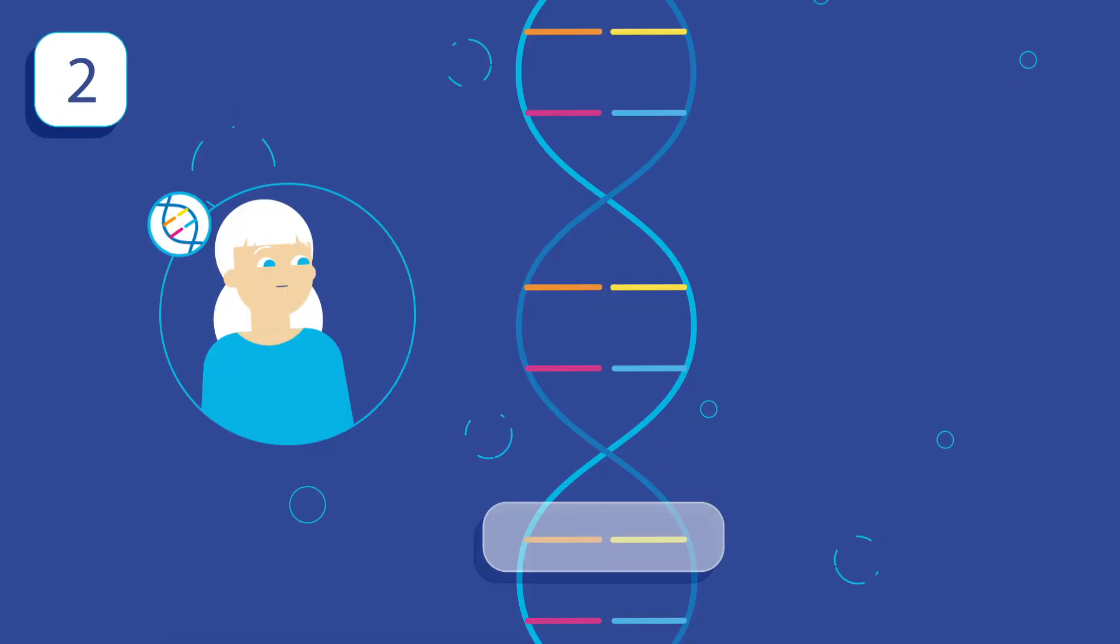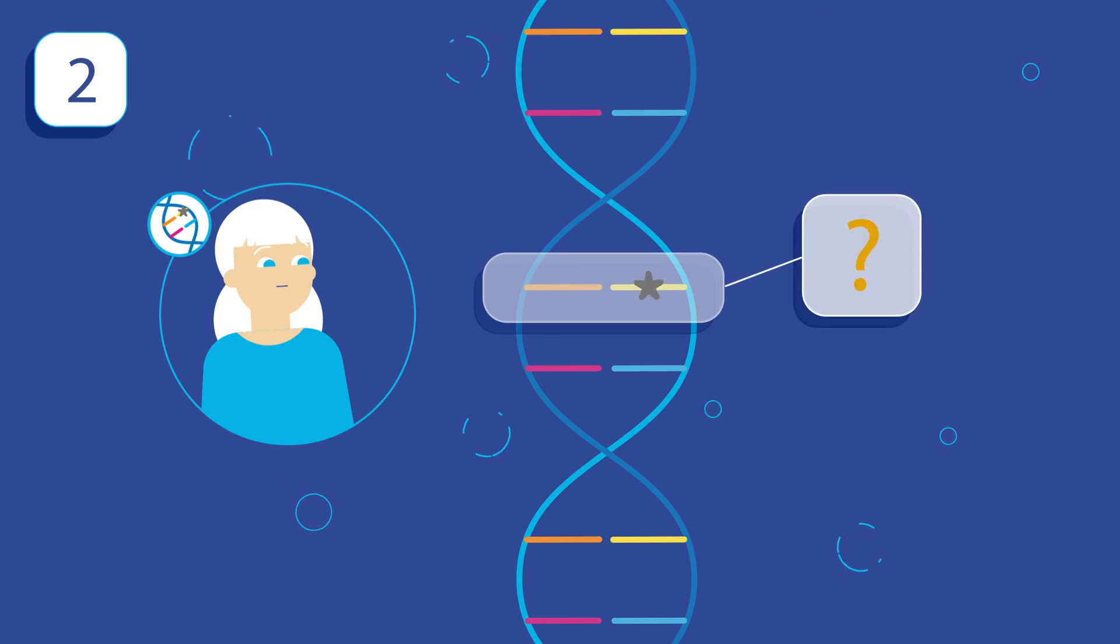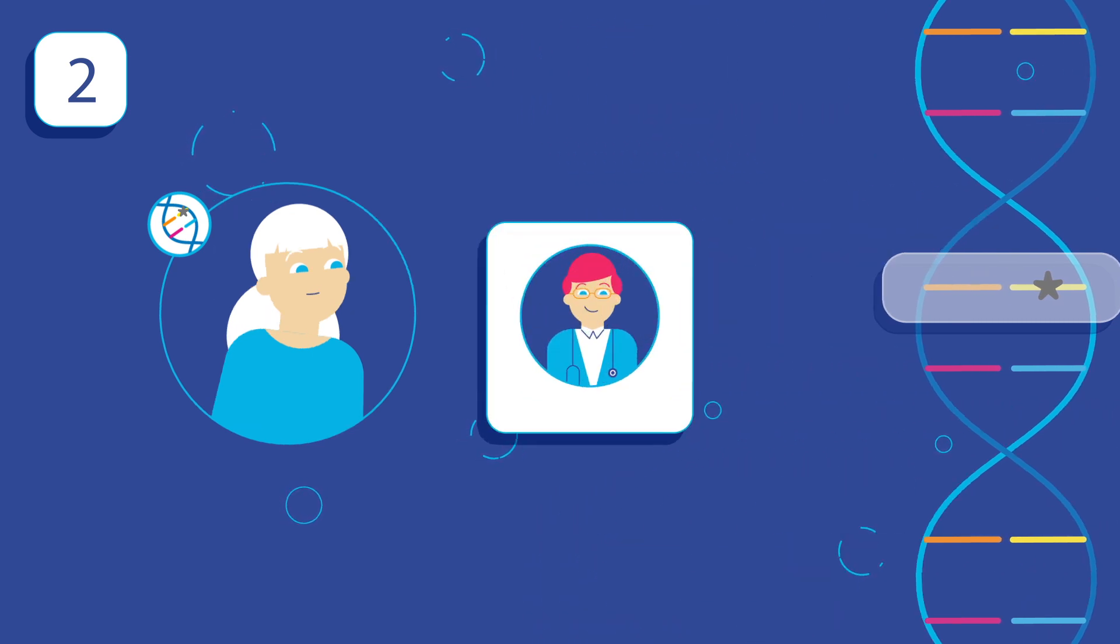Two. Because we don't yet know everything there is to know about the genome, sometimes we find a gene variant which we don't understand. This means we can't be sure if this variant is the cause of your condition or a harmless variant.